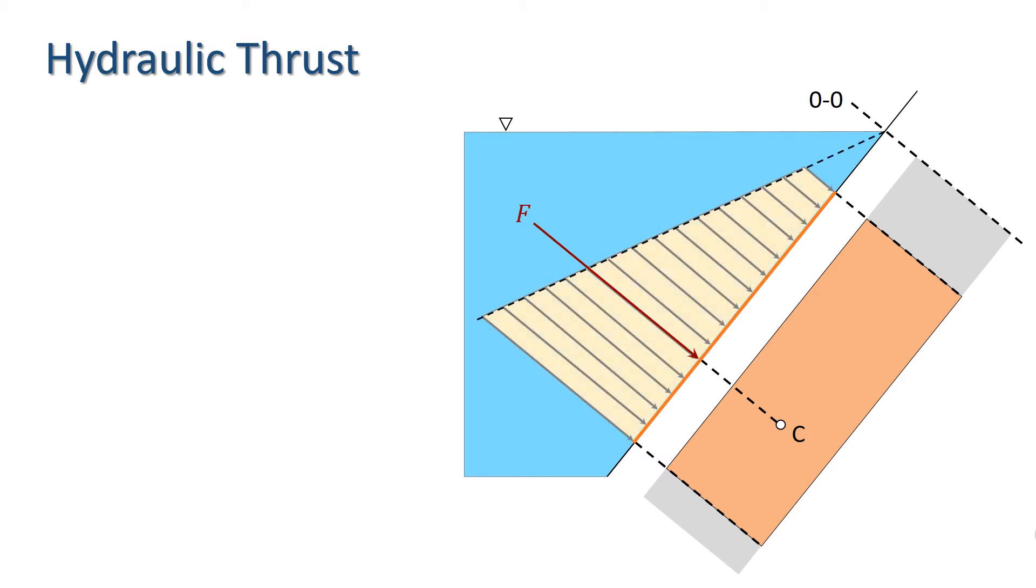To find the hydraulic thrust, we need to integrate the pressure over the surface of interest. In the case of a rectangle, this is straightforward, but here I'm going to derive a method for a general case so that we can deal with surfaces with a variety of shapes.